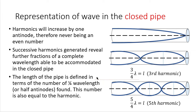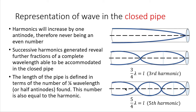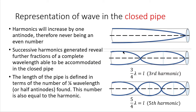This relationship is defined in terms of quarter wavelengths or half antinodes. In the first harmonic you have one half antinode or one quarter wavelength. In the third harmonic you have three quarter wavelengths or three half antinodes. In the fifth harmonic you have five quarter wavelengths or five half antinodes. That gives the number of harmonics found in that particular closed pipe at the particular speed the wave is being pushed through the pipe to create those different frequencies.